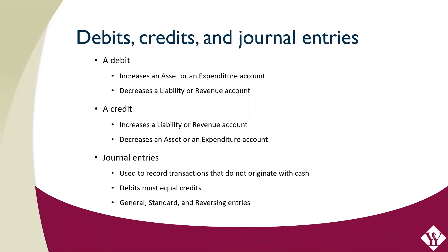Debits and credits and journal entries. Every transaction in an accounting system is represented by debits and credits, and the debits and credits for every transaction are always equal to each other. This is one of the main features of what we call a double-entry accounting system. A debit is a transaction that increases an asset or an expenditure account, or decreases a liability or revenue account. A credit is the opposite — it increases a liability or revenue account or decreases an asset or expenditure account. Journal entries are used to record transactions that do not originate as a cash receipt, cash disbursement, payroll, or a billing such as an accounts receivable or accounts payable invoice. Journal entries will always contain equal debits and credits in order to be a balanced transaction in our double-entry accounting system.